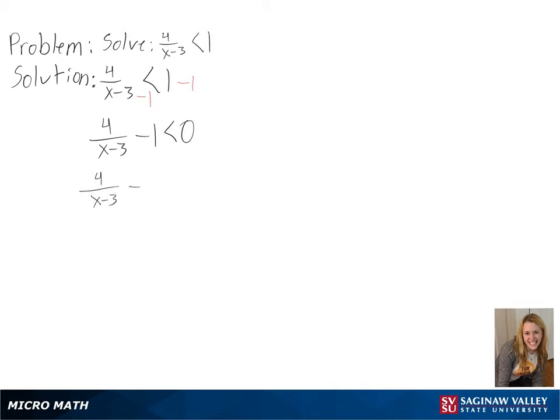Then, to get a common denominator, we can multiply 1 by x minus 3 over x minus 3. We can then simplify this, since 4 minus x minus 3 is equal to 7.